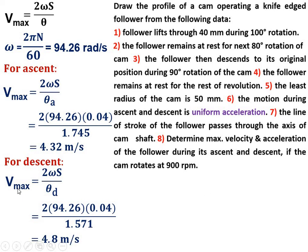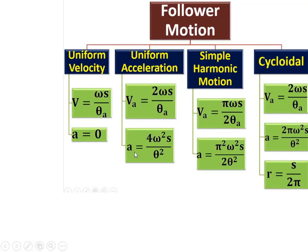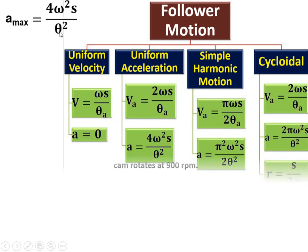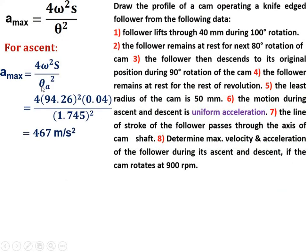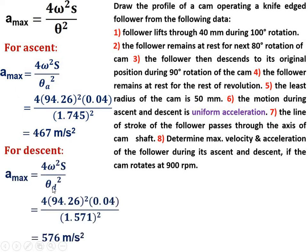For maximum acceleration during ascent: 4ω²s/θ_a² = 4 × (94.26)² × (0.040) / (100 × π/180)², giving 467 m/s². For descent: replacing θ_a with θ_d = 90 degrees (in radians), maximum acceleration = 576 m/s². So the results are: maximum velocity for ascent and descent, and maximum acceleration of 467 m/s² for ascent and 576 m/s² for descent.